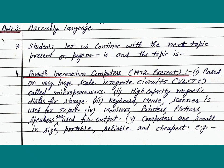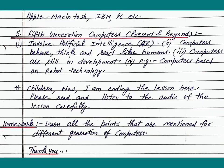Point 5: Computers are small in size, portable, reliable and cheapest. Examples: Apple Macintosh, IBM PC, etc.